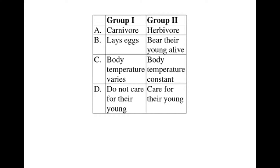Their temperature remains the same despite the changes in temperature of their surrounding. So comparing what Sunkuri used to classify, he classified them as cold-blooded and warm-blooded. Cold-blooded animals change their body temperature with the surrounding, and warm-blooded animals maintain a constant body temperature. The answer is C: body temperature varies versus body temperature constant.